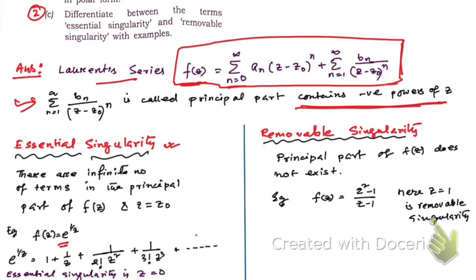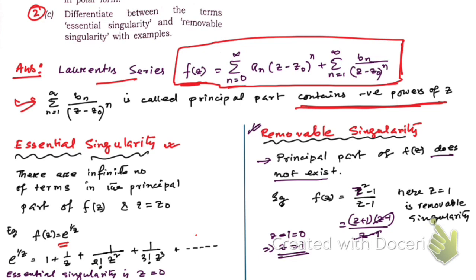In the case of a removable singularity, the principal part does not exist. For example, (z²−1)/(z−1) = (z+1)(z−1)/(z−1) — the (z−1) factor cancels, removing the singularity at z = 1. Since there are no negative powers of z remaining, the principal part doesn't exist, which is why it's called a removable singularity.